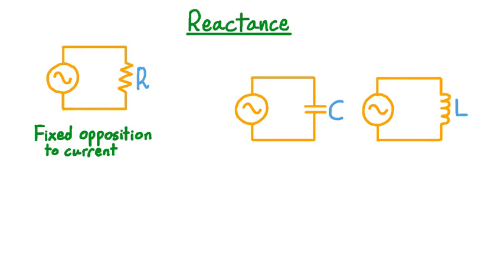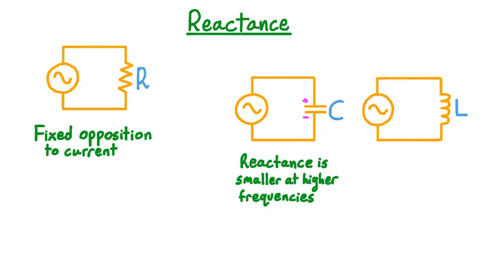The same is not true of inductors and capacitors in alternating current circuits. Although the capacitance C and the inductance L don't depend on the voltage, the inductor and capacitor's opposition to current does depend on the frequency of the voltage in the circuit. For a capacitor, the more charged it is, the more it opposes current. The faster the electromotive force changes directions — that is, the higher its frequency — the less the capacitor charges before discharging again. So at higher frequencies, the capacitor has a smaller reactance.